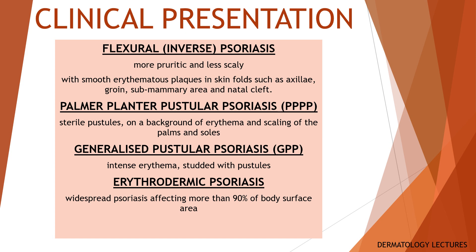Palmoplantar pustular psoriasis appears as sterile pustules on a background of erythema and scaling of the palms and the soles. About 10% of patients will have psoriatic plaques at other sites too. Palmoplantar pustular psoriasis can be difficult to treat, painful and disabling for patients. It is associated with smoking and can respond to the application of super potent topical steroids, but will frequently require further treatment. Unfortunately, smoking cessation does not always result in an improvement.